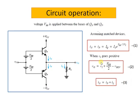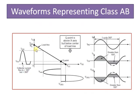If you want to look into the waveforms representing class A, as mentioned earlier, this lies between class A and class B. That is why the operating region or the Q point is not at the cutoff nor at the center, it is in between.